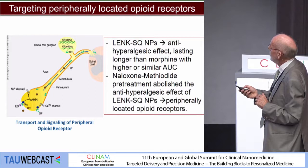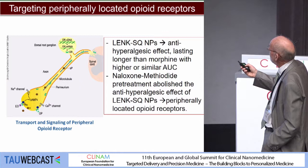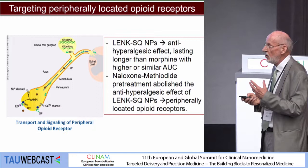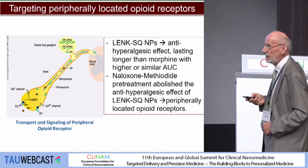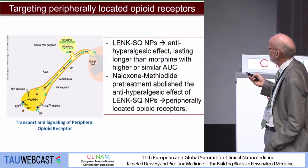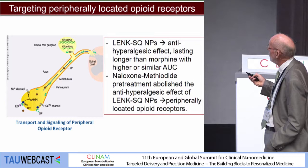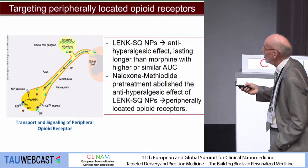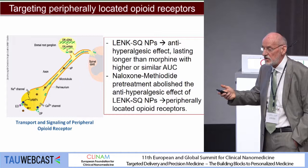In conclusion, the leu-enkephalin squalene nanoparticles induced a very strong anti-hyperalgesic effect lasting longer than morphine, with a higher or similar area under the curve depending on the bioconjugate. Naloxone methiodide pretreatment abolished the anti-hyperalgesic effect, demonstrating pharmacological activity at peripheral opioid receptors. This explains the absence of tolerance and addiction.